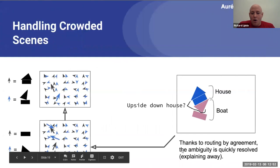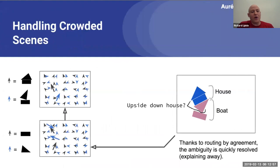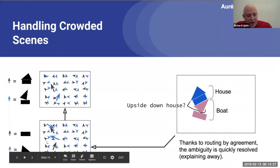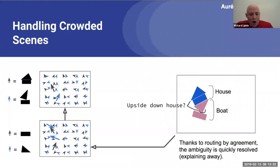Regarding handling crowded scenes: routing by agreement is a very powerful method to deal with this. We could ask ourselves, do we have an upside-down house in this image? If we counted that as an upside-down house, we would not be able to see the right-side-up house and the boat. The activation vectors change so that we have one house and one boat in the house-boat layer. The upside-down house didn't appear because that would have left an orphan triangle and orphan rectangle.